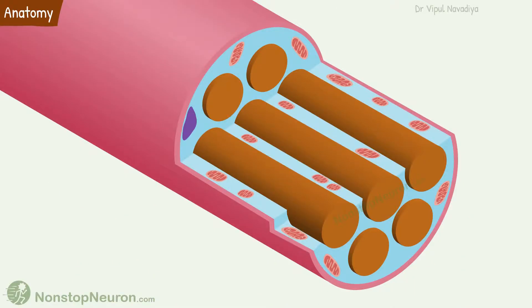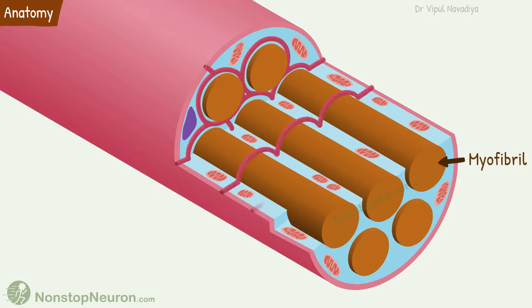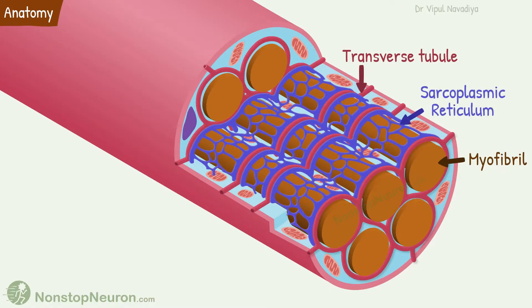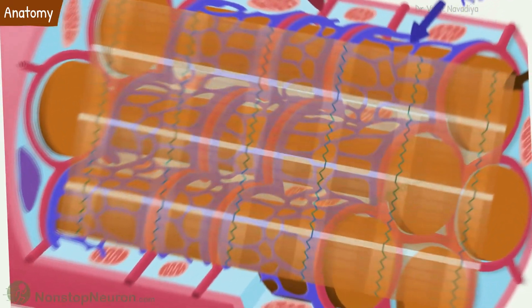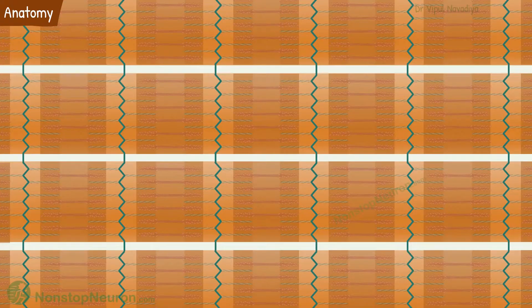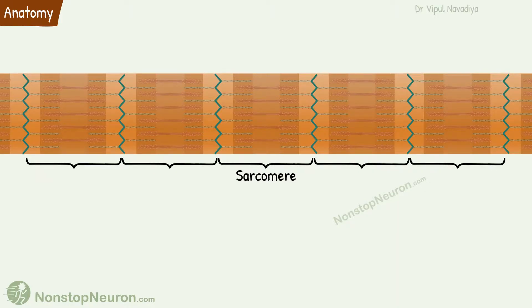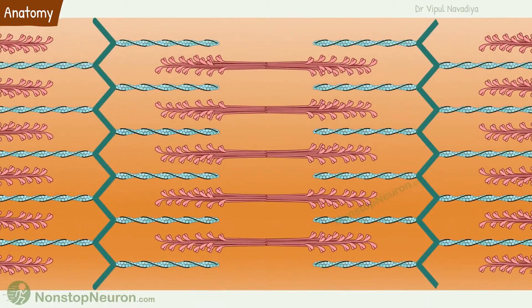Let's get started with a quick revision of the anatomy. A muscle cell contains myofibrils, transverse tubules, and sarcoplasmic reticulum. Myofibrils are cylindrical and arranged parallelly. Each myofibril in turn is a chain of regularly repeating units called sarcomeres. Sarcomeres contain thin filaments and thick filaments.